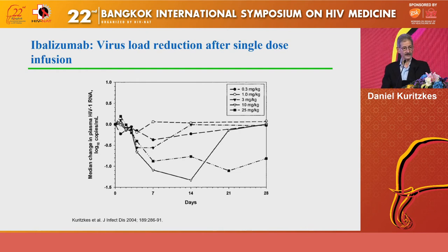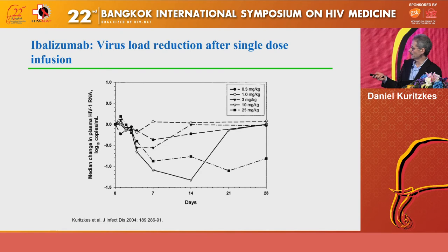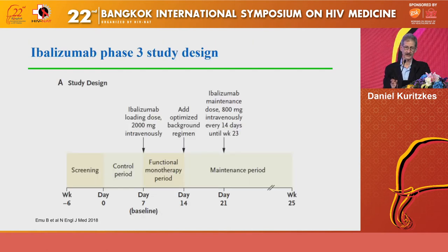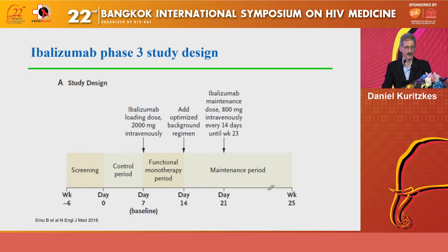About 15 years ago we did the phase 1 single ascending dose study of ibalizumab, and a single infusion led to up to about a 1.3-1.4 log reduction in plasma HIV RNA, taking about 14 days to achieve — slow virologic decline but moderately potent activity. After a series of misadventures in clinical development, a phase 3 study using the novel salvage therapy trial design worked out through the Forum for HIV Collaborative Research in partnership with the FDA, the community, and investigators led to the approval of this drug.